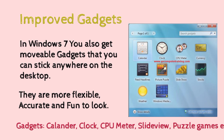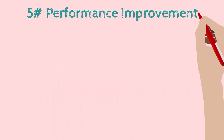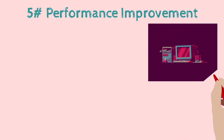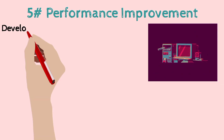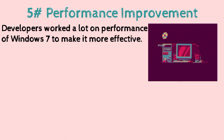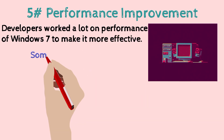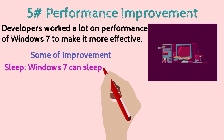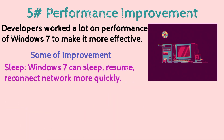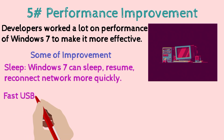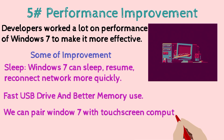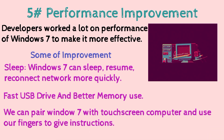The fifth feature is performance improvement. Developers worked a lot on Windows 7's performance to make it more effective. Some improvements include Sleep — Windows 7 can sleep, resume, and reconnect to the network more quickly. We also get faster USB drive support, better memory use, and Windows 7 can be paired with touch screen computers to use fingers to give instructions.